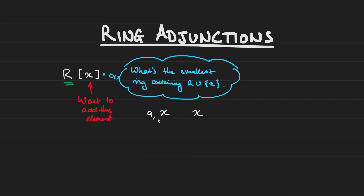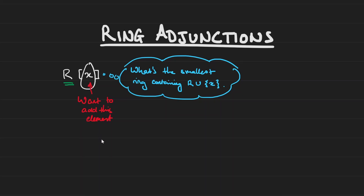You want to add in a₁x, a₂x², and so on. Now this element that we add doesn't necessarily have to be a formal variable — it could be an element living in a bigger ring. So let's take a look at a few examples. The first example I'm going to give are the so-called Gaussian integers.